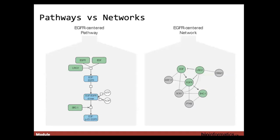A biological pathway is a series of actions that occur among molecules within the cell, leading to a certain product or change. There are metabolic pathways — like the conversion of glucose to energy — signal transduction pathways that move a signal from the cell's exterior to its interior, and gene regulation pathways that turn genes on and off.